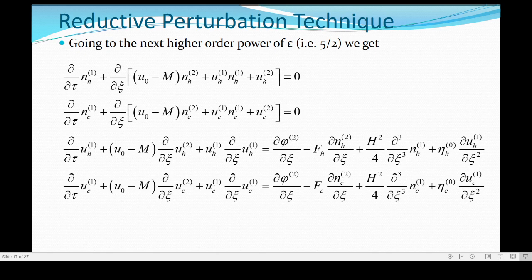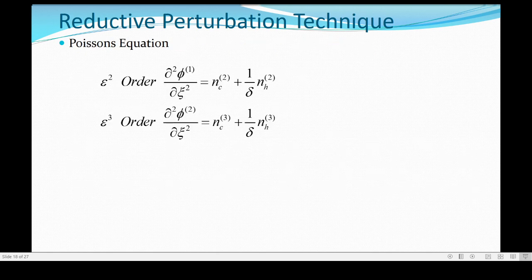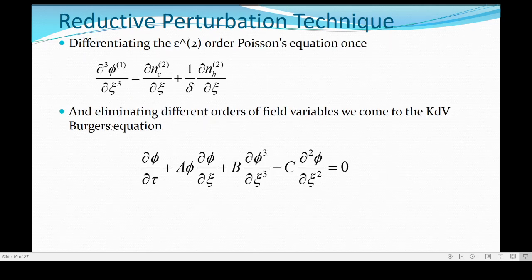So, going to the higher order again, we get these five equations, four equations, two for each, momentum and continuity for the hot and cold electrons. And, similarly, we go for Poisson's equation. But, since you see, it is the second derivative of xi, epsilon square is the lowest order and epsilon cubed is the next higher order.